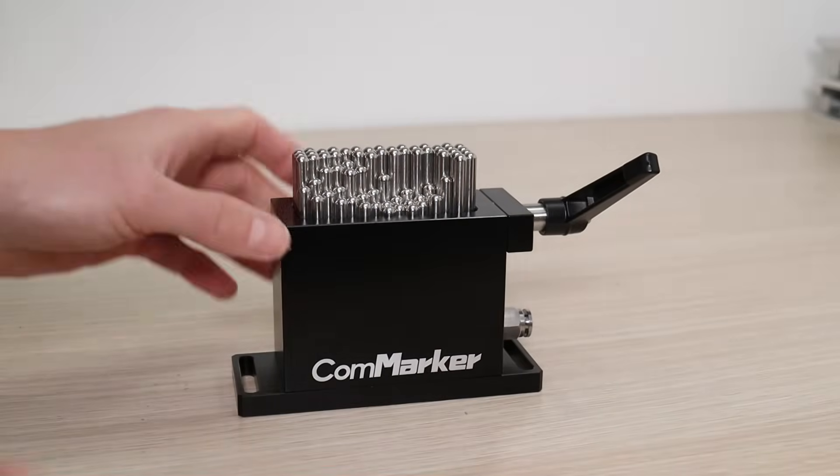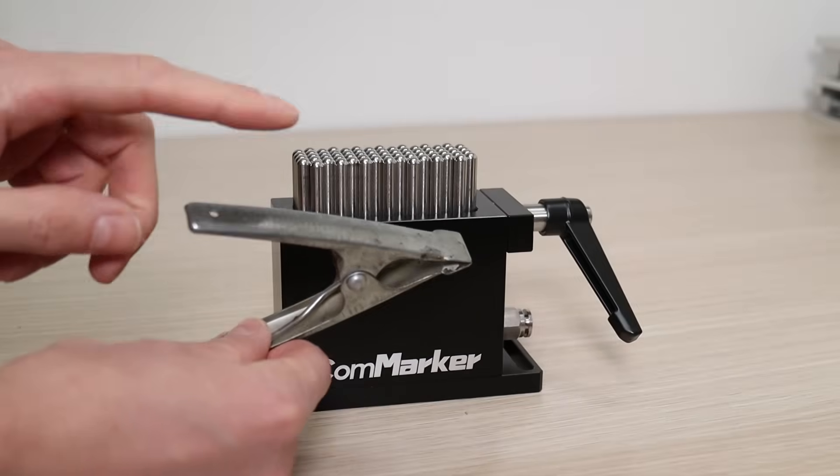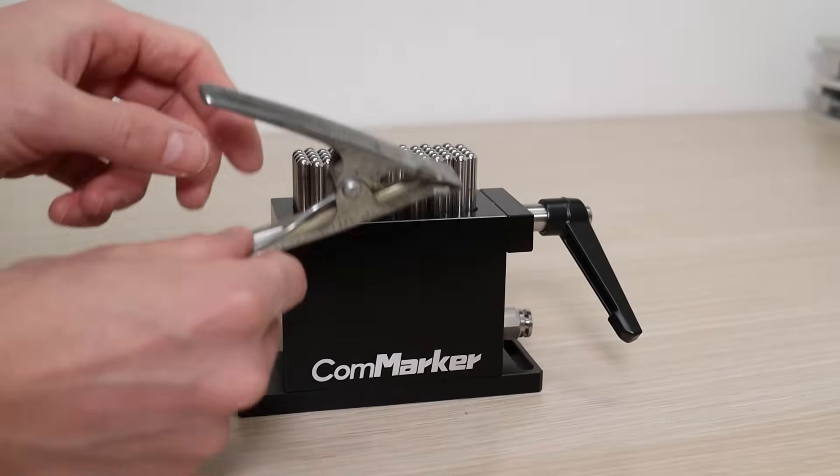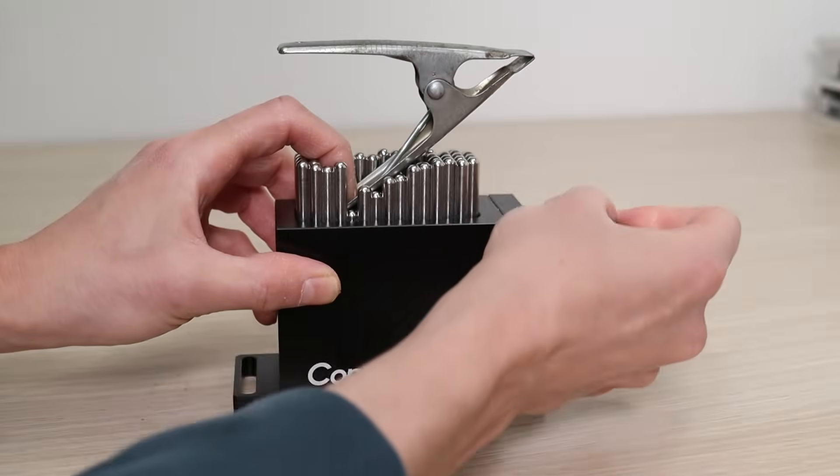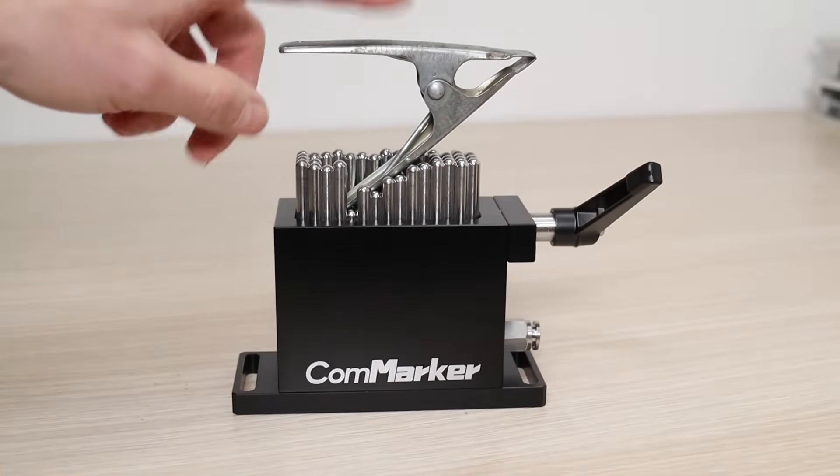It features multiple spring-loaded pins that lock in place with a lever, allowing you to secure objects in almost any position. For example, if I need to engrave the handle of a clamp, I can easily position it in the Flexible Fixture, ensuring it stays securely in place.